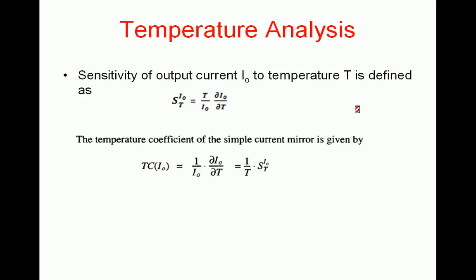The temperature coefficient of a simple current mirror is defined as Tc of I0, equal to 1 divided by I0 times the partial derivative of I0 with respect to T. This general definition applies not only to simple current mirrors but to any parameter of any current.